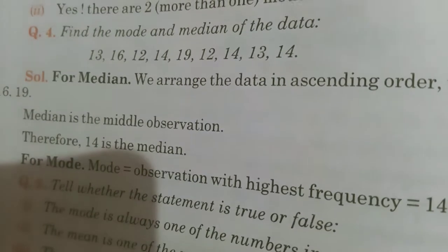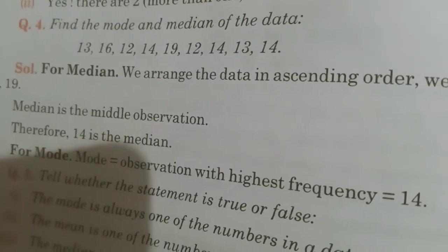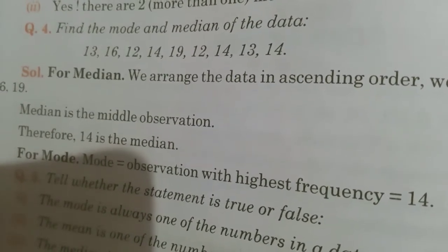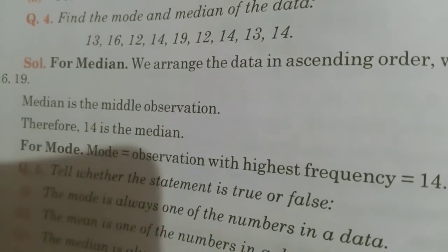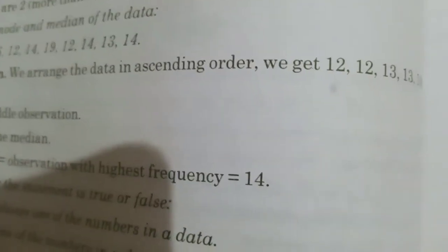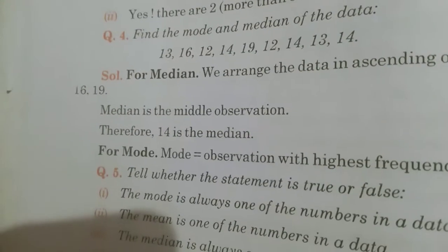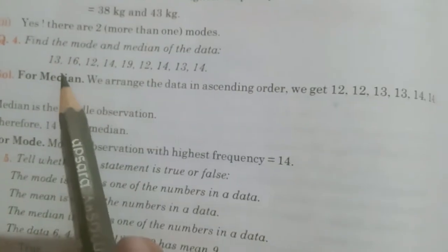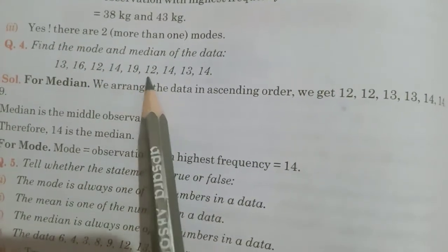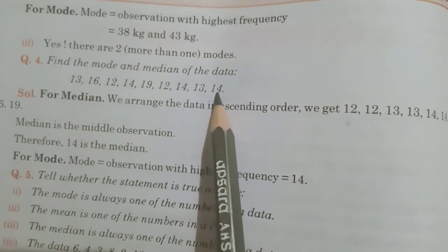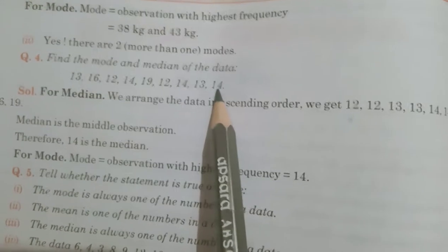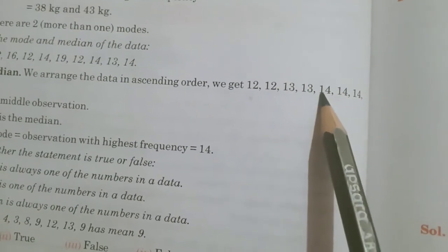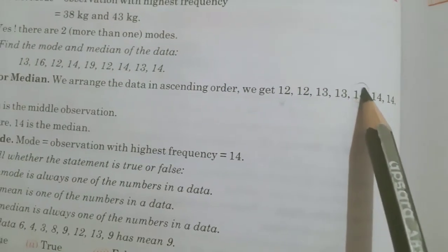Now, see the question number 4. Find mode and median for the data. We concentrate on median now. Data is 13, 16, 12, 14, 19, 12, 14, 13, 14. Arrange it in ascending order. What will be the ascending order? 12, 12, 13, 13, 14, 14, 14, 16, 19. Total, how many observations are there? 1, 2, 3, 4, 5, 6, 7, 8, 9. 9 by 2. That is 4.5. Means, 5th observation. What will be the 5th observation? 1, 2, 3, 4, 5. That is 14. Therefore, 14 is the median. Is it clear?